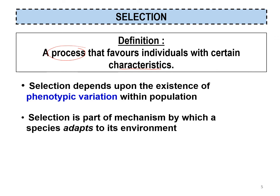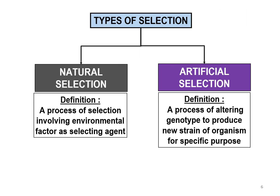Selection is part of the mechanism by which a species adapts to its environment. Natural selection is a process of selection that involves environmental factors as the selecting agent — the environment itself, the nature. Artificial selection is a process of altering genotype to produce new strains of organisms for a specific purpose; it does not occur naturally and environmental factors do not play a role.